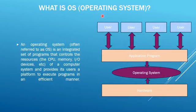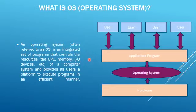Now, what is an operating system? Do you know that you and your computer speak different languages? Your computer can't speak French, English, or Chinese — it speaks in 1's and 0's. You can communicate with the computer through the operating system. It allows you to communicate with the computer without knowing how to speak the computer's language. The operating system can be defined as an integrated set of programs that controls resources — the CPU, memory, and input/output devices of a computer system — and provides its users a platform to run and execute programs in an efficient manner.